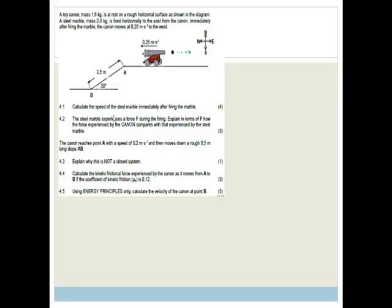It says calculate the speed of the steel marble after firing the marble. So yes, we're looking at momentum and using the conservation of momentum. We're going P before equals P after. This is a pretty easy one in the sense that you just need to realize that the marble was in the middle of the cannon to start with, and they were both stationary. So the momentum before was zero. That's the only tricky part of this question. After that, it's really easy.